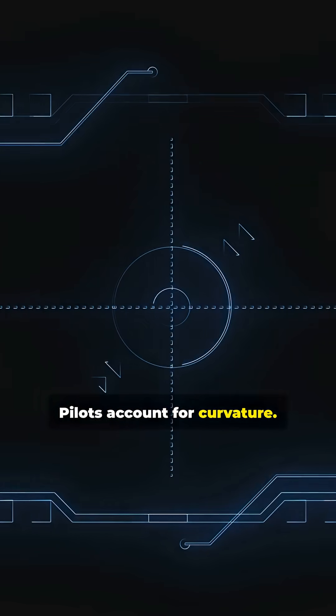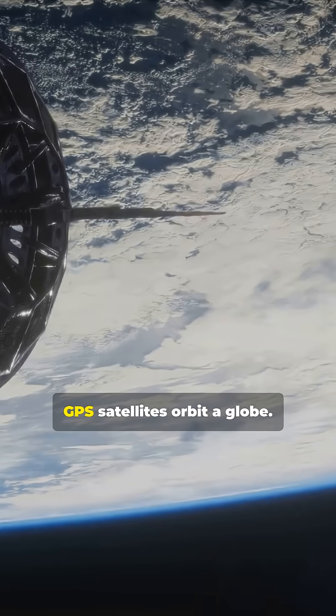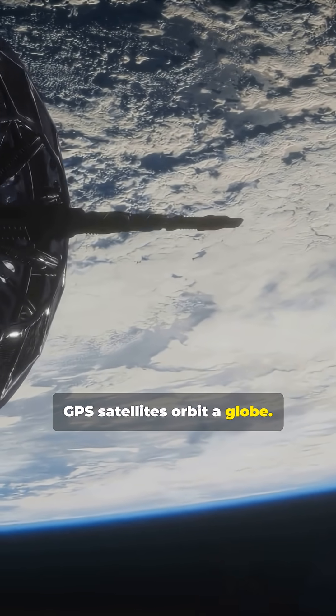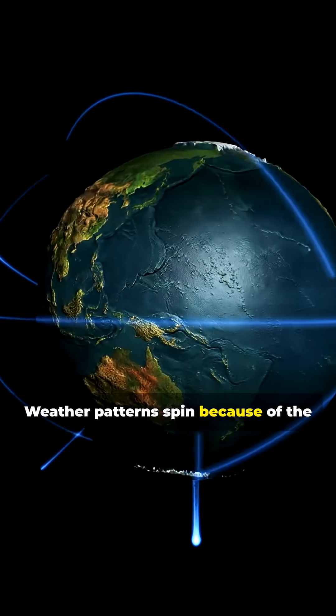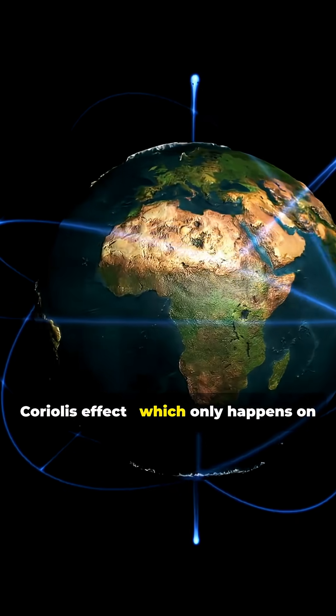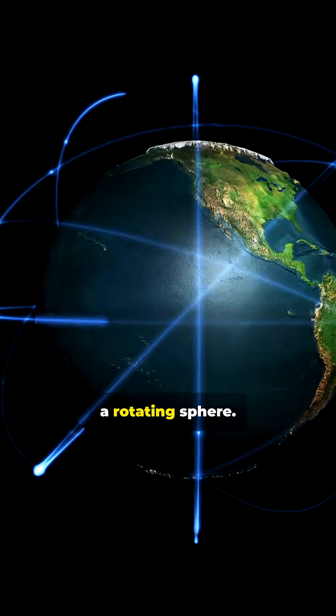Pilots account for curvature. GPS satellites orbit a globe. Weather patterns spin because of the Coriolis effect, which only happens on a rotating sphere.